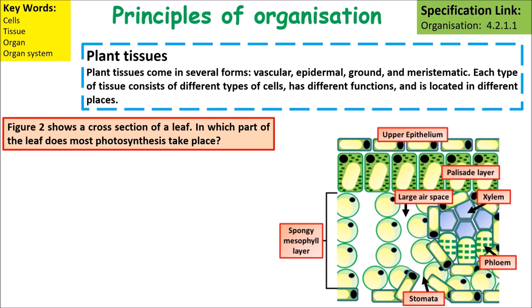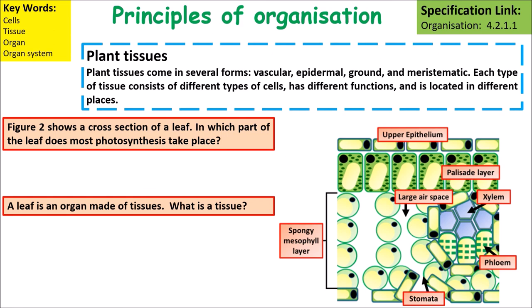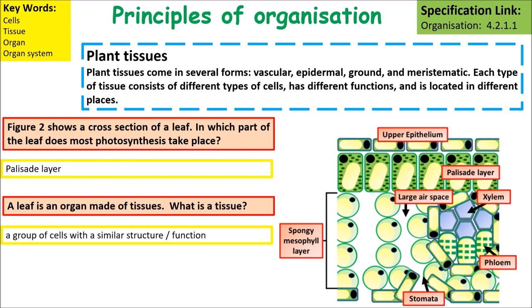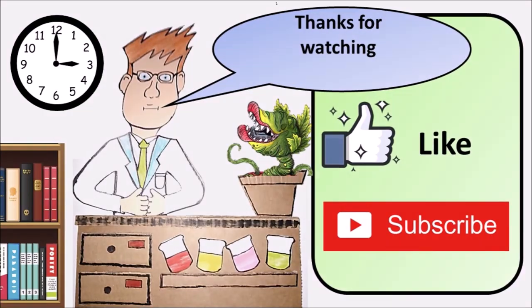Looking at a diagram showing a cross-section of a leaf: most photosynthesis takes place in the palisade layer, also called the palisade tissue. A tissue is a group of cells with similar structure and function. Thanks for watching.